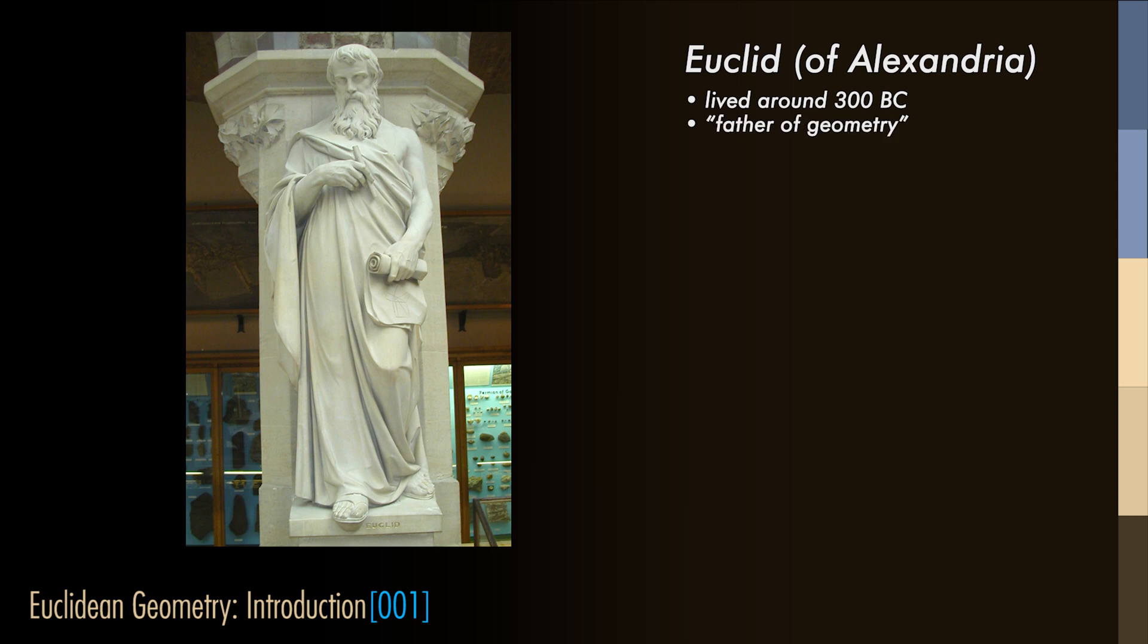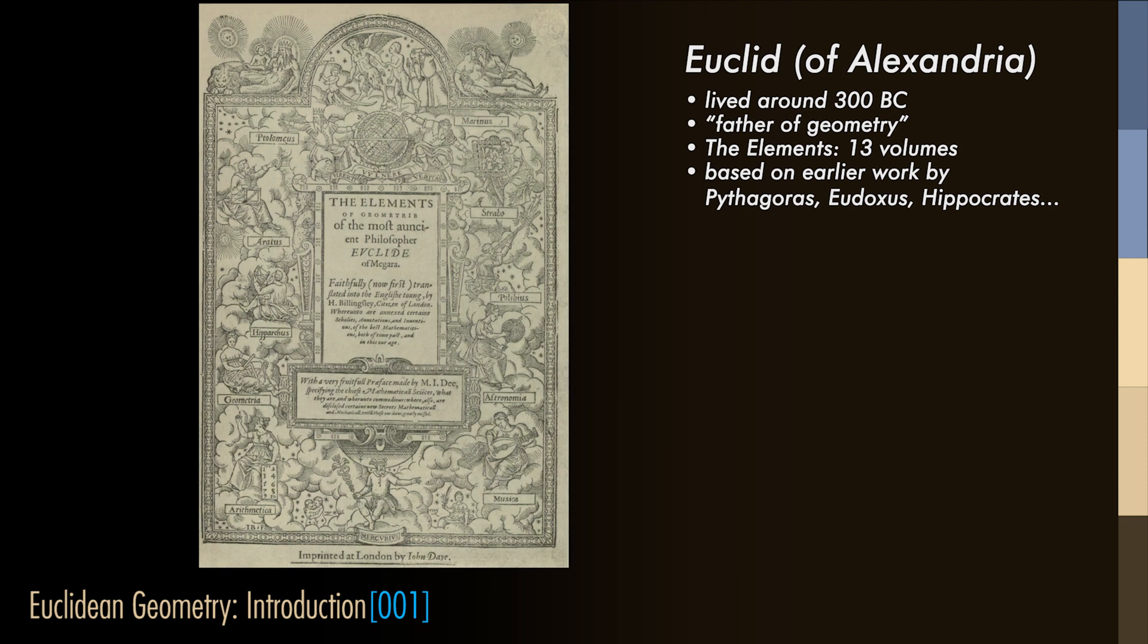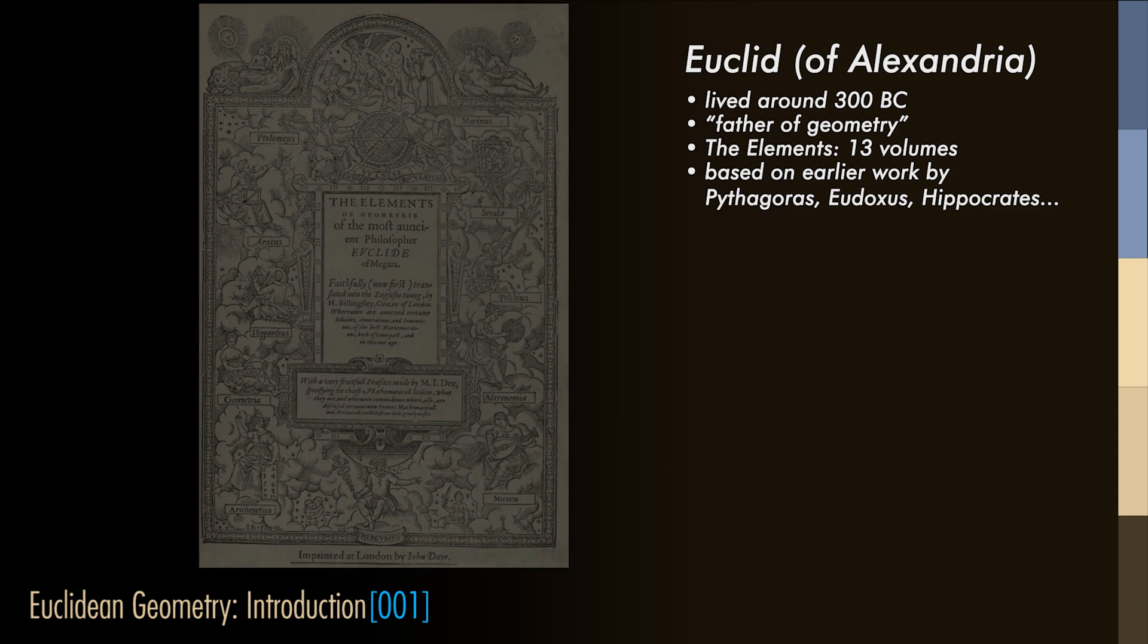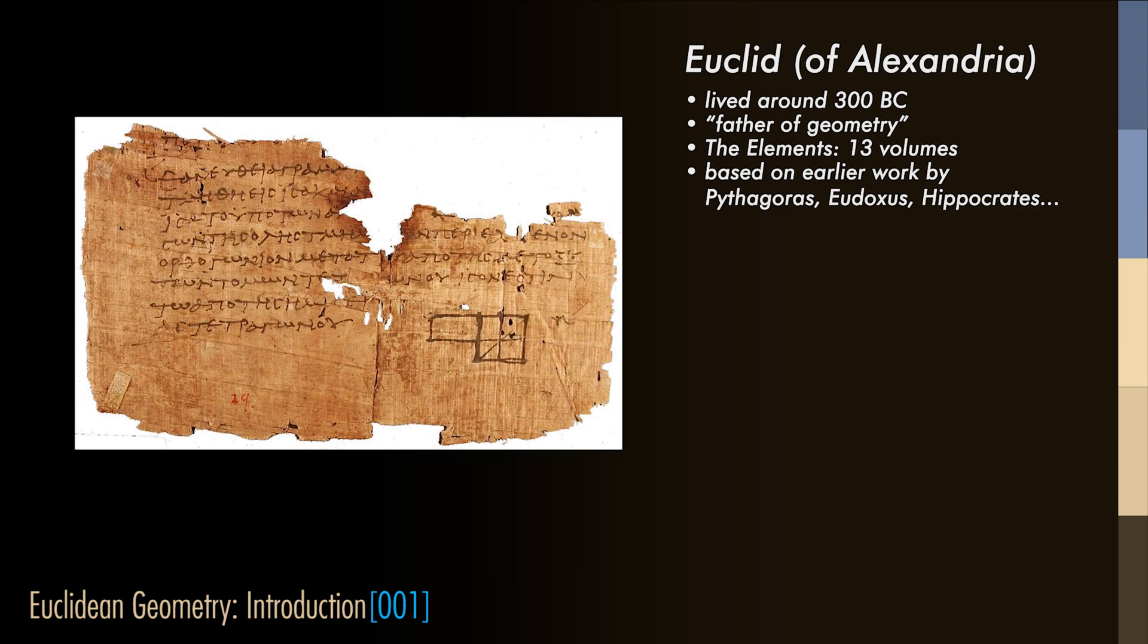Euclid is called the father of geometry, though the contents of the Elements, which is the name of his thirteen-volume work, have their basis in earlier works that are all but forgotten. As with so many works of antiquity, the originals of the Elements have been lost, and the transcripts we possess are from several centuries later.